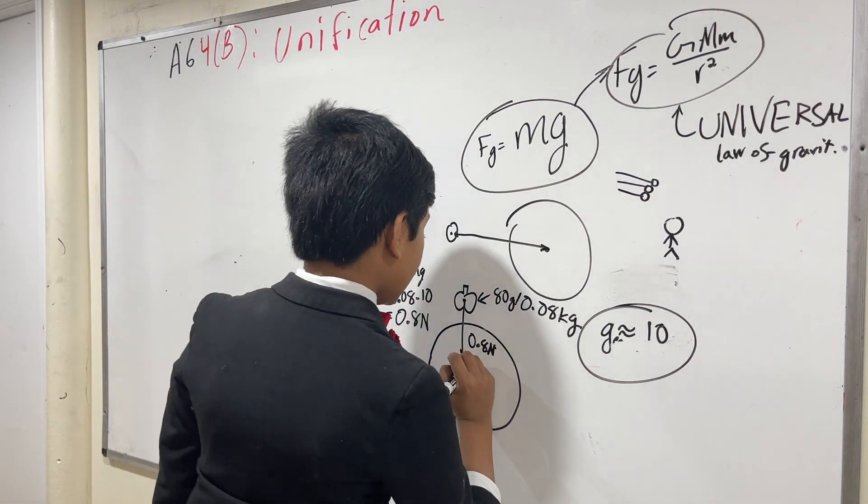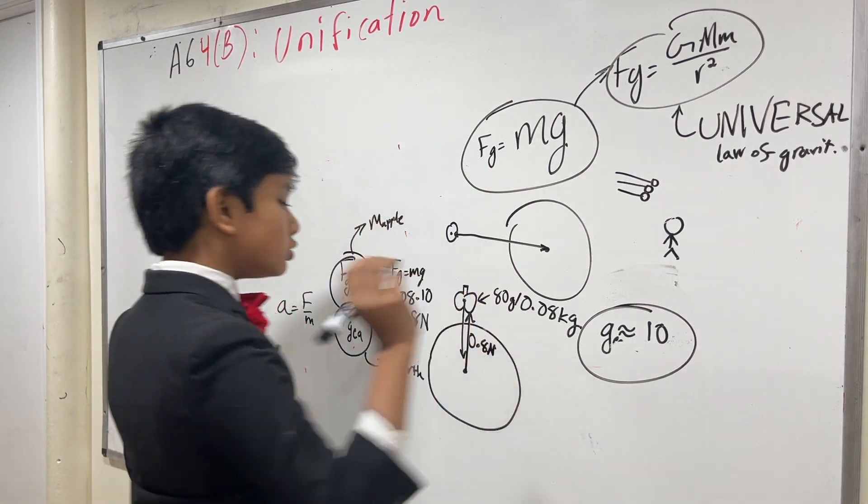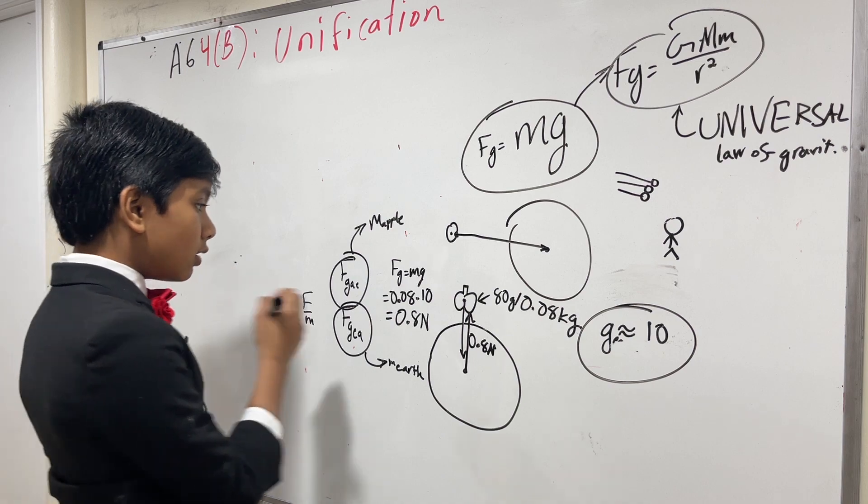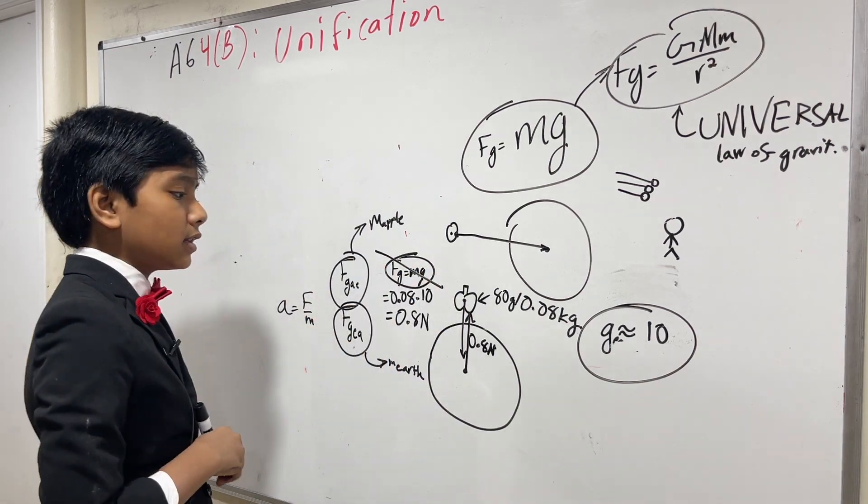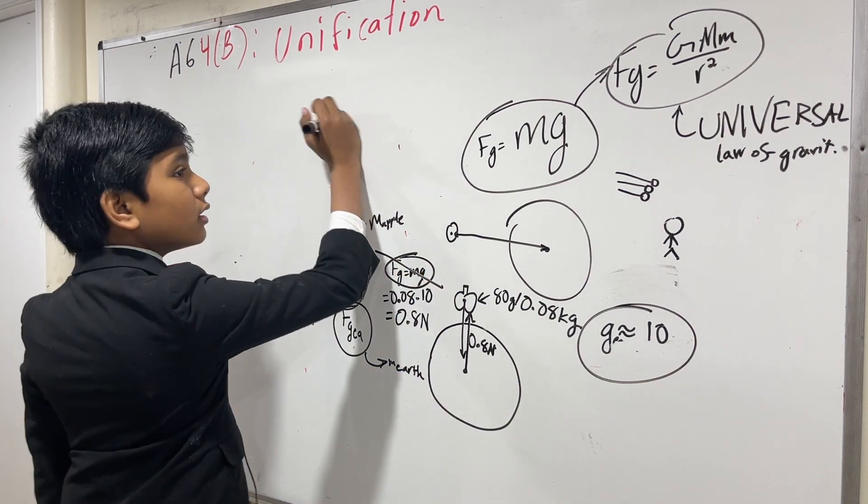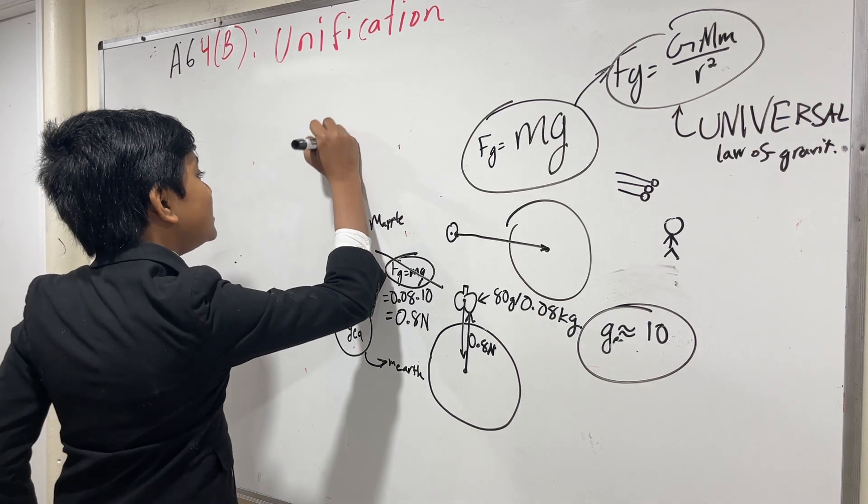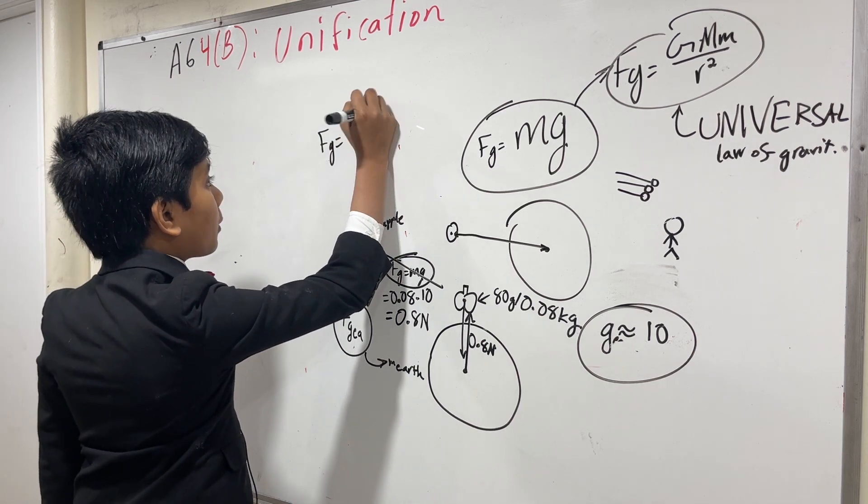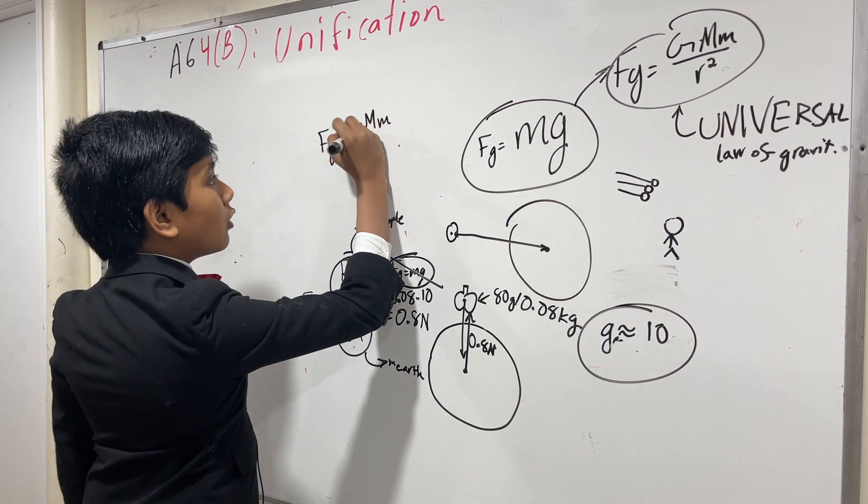So that means that the force that the earth exerts on the apple is 0.8 newtons. What about the force the apple exerts on the earth? Well, it's also 0.8 newtons. How do we know? Well, let's not use this gravitational equation. But, rather, the gravitational equation Fg is G big M little m over r squared.